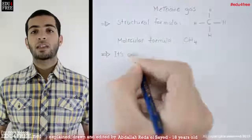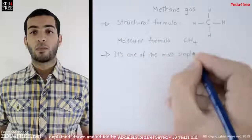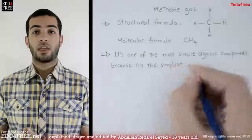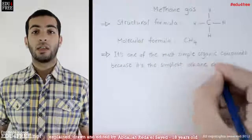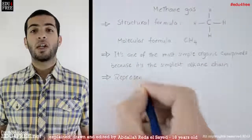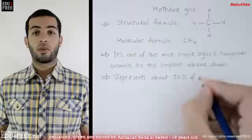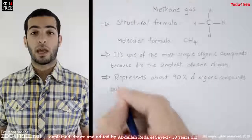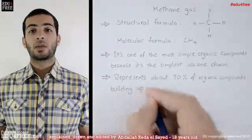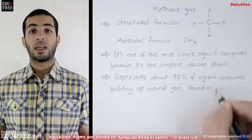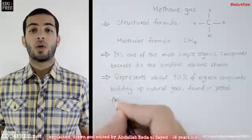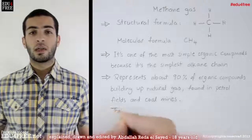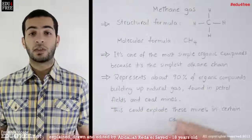Methane gas is one of the most simple organic compounds because it's the simplest alkane chain, and it represents about 90% of the organic compounds that actually make up natural gas. It's also found in petrol fields and in coal mines, which basically could cause explosions in certain cases.